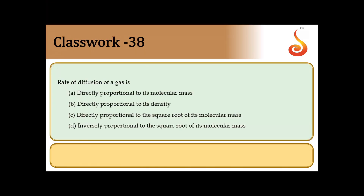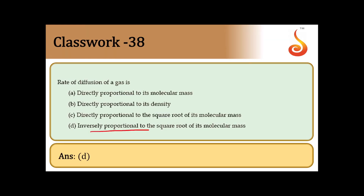Question 38: Rate of diffusion of a gas — which statement is correct? Graham's law states rate of diffusion is inversely proportional to the square root of its molar mass (or density). Answer is option D.